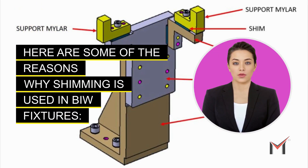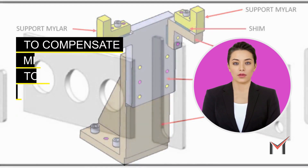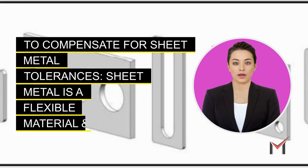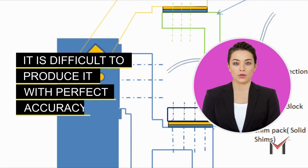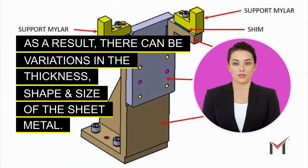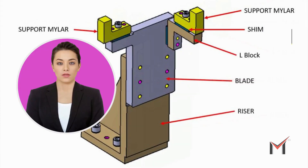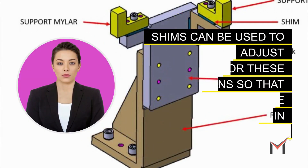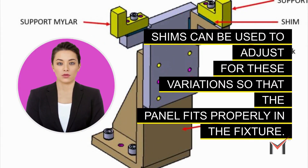Here are some of the reasons why shimming is used in BIW fixtures. To compensate for sheet metal tolerances: sheet metal is a flexible material and it is difficult to produce with perfect accuracy. As a result, there can be variations in the thickness, shape, and size of the sheet metal. Shims can be used to adjust for these variations so that the panel fits properly in the fixture.